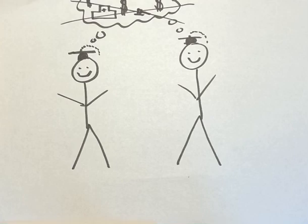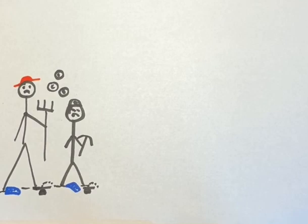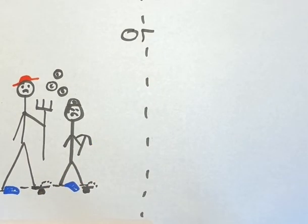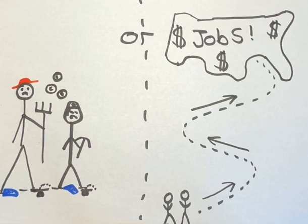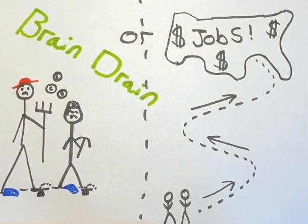This leaves these educated people with very few options. They can stay and not use their education to their advantage, or they can leave for the United States knowing they're much more likely to be successful. This is brain drain.